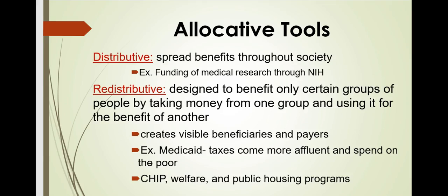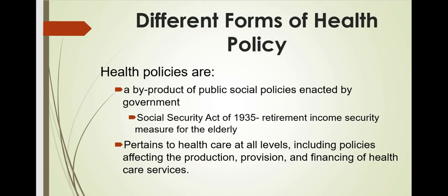The two main types of allocative tools are distributive and redistributive policies. Distributive policies spread benefits through a society — for example, funding of medical research through NIH and development of medical personnel. Redistributive policies take money and use tax funds to benefit a certain category of people, such as the poor, the elderly, or children. An example is Medicaid, where taxes from more affluent groups are spent on the poor, as well as CHIP, welfare, and public housing programs.